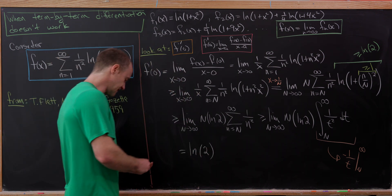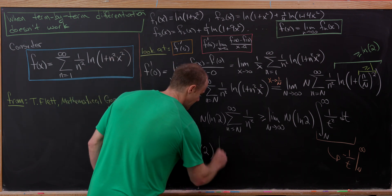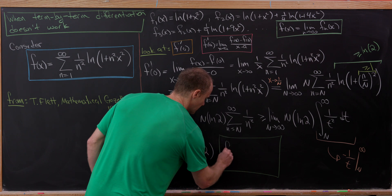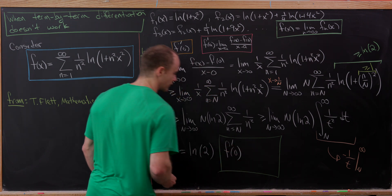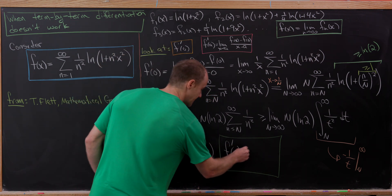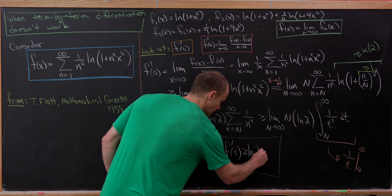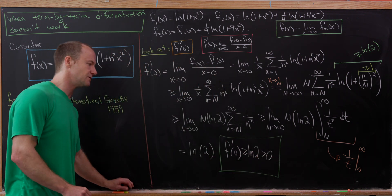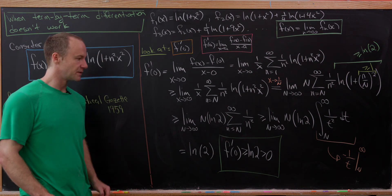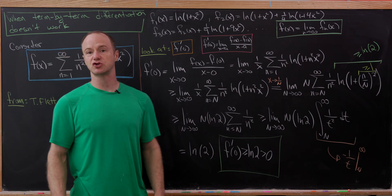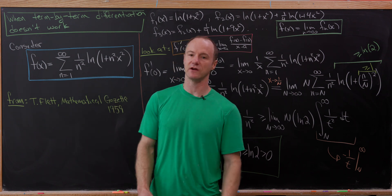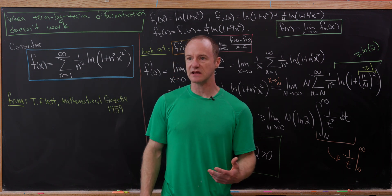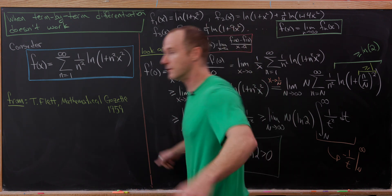Let's summarize what we've just shown. We've shown that the derivative of f at 0 is bigger than or equal to natural log of 2, which itself is bigger than 0. Now let's move to try and calculate the derivative via term-by-term differentiation and see that we have a problem.